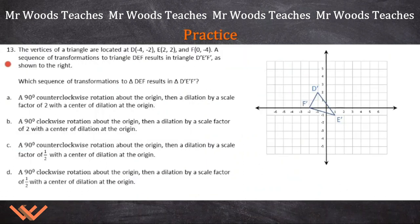13. The vertices of a triangle are located at D negative four, negative two, E two, two, and F zero, negative four. A sequence of transformations to triangle DEF results in triangle D prime, E prime, F prime as shown to the right. So this is the result of a series of transformations. Which sequence of transformations to triangle DEF results in triangle D prime, E prime, F prime? Well, first we need to draw this triangle here.